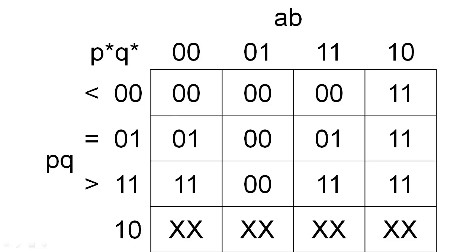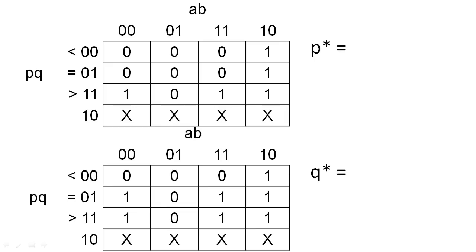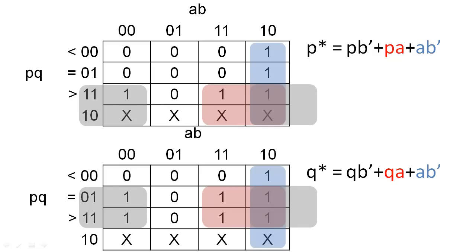Now that we have completed our symbol K-map, let's encode our symbols into binary values. Then we can split this new K-map into two separate K-maps, one for each output variable. We can then solve these two K-maps to find the minimal expression for each comparator output.